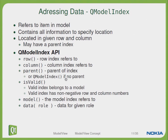We can also ask the QModelIndex whether it is valid, which means it belongs to a model and does not have negative row and column numbers. We can also ask the QModelIndex about which model it belongs to. And most importantly, we would like to get some data. The data method also accepts a role so that we can get data for a given role, and we will see later how to use the different roles.